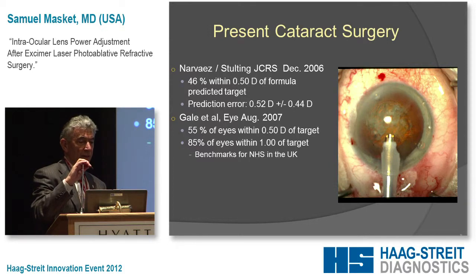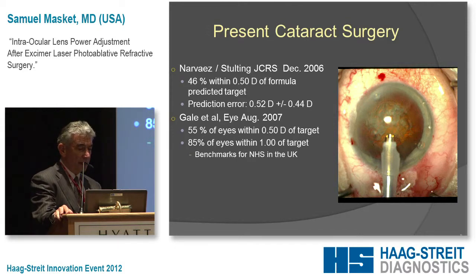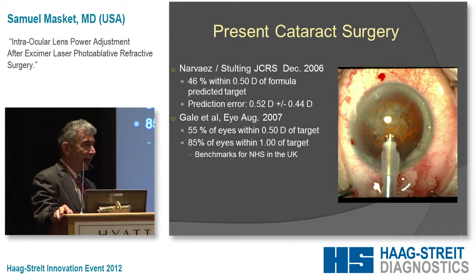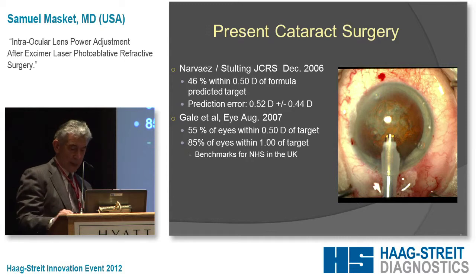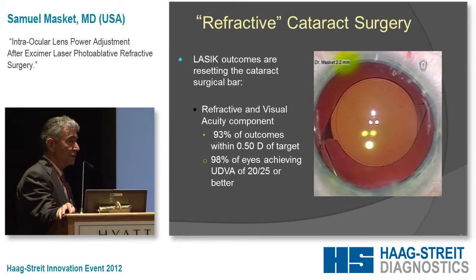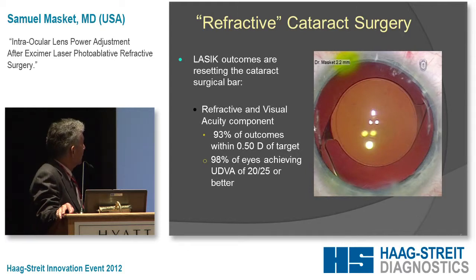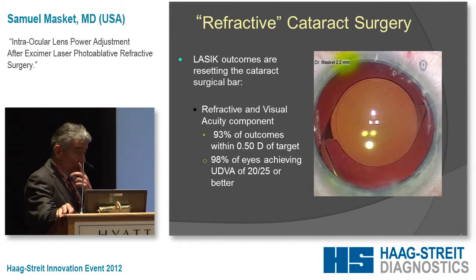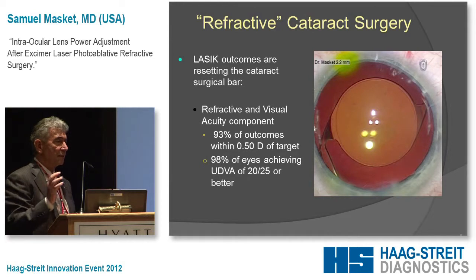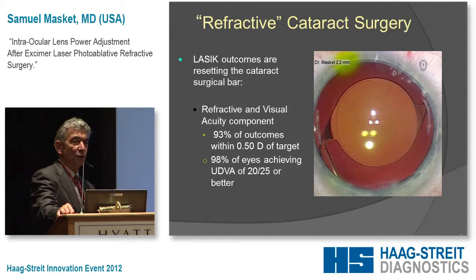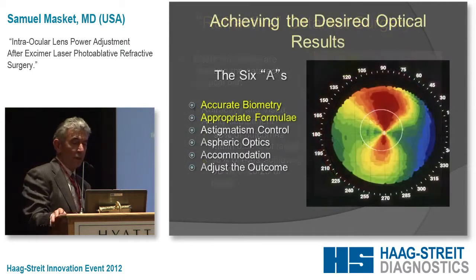Looking at the current state of cataract surgery, the standard set for the NHS in the UK is 55% of eyes within a half diopter of expected outcome and 85% within one diopter. With biometry and laser interferometry in routine patients, we're doing much better. Contrast that with the LASIK individual, where published data indicates 93% of patients are within a half diopter and 98% see 20/25 uncorrected. People who've had photoablative surgery expect to fall into that latter group — that's where our challenge rests.